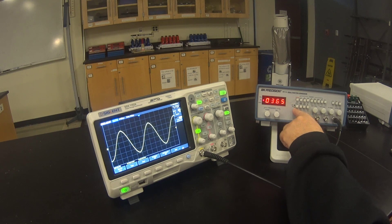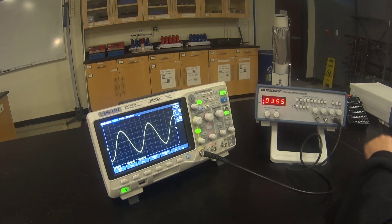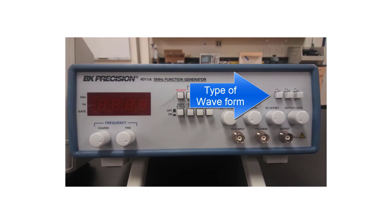There are four buttons on the function generator. For the things that we are going to be doing in the labs of this class, these buttons should be off. These three buttons determine the type of signal the function generator is creating.